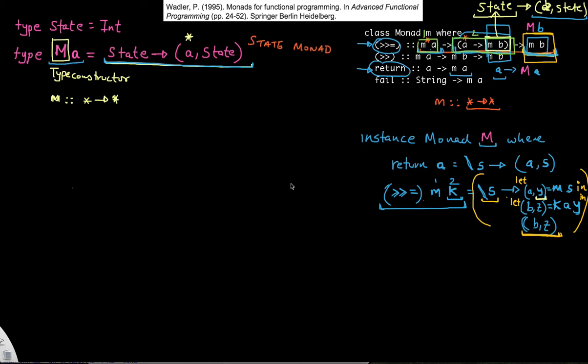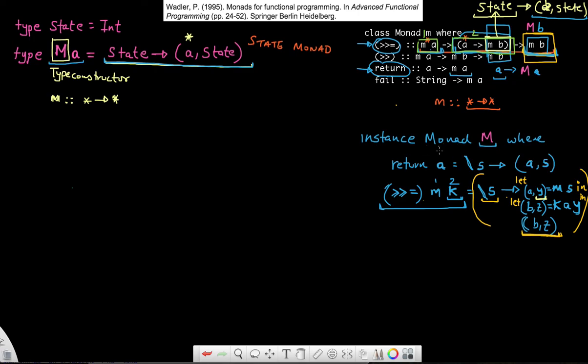All right guys. So in this video, we're going to continue with State Monads. And again, as I mentioned previously, I highly recommend reading this paper by Philip Wadler on Monads for Functional Programming. Some of the examples I'm going to use in this video have been inspired from this paper. Now that we have an instance of the Monad type class created, I'm going to combine what we've been learning and put it together in a really simple example.